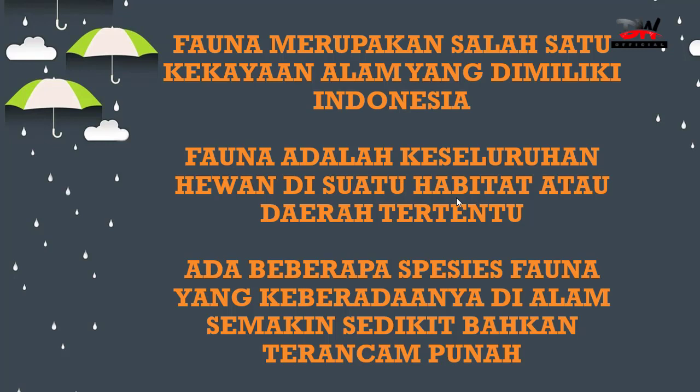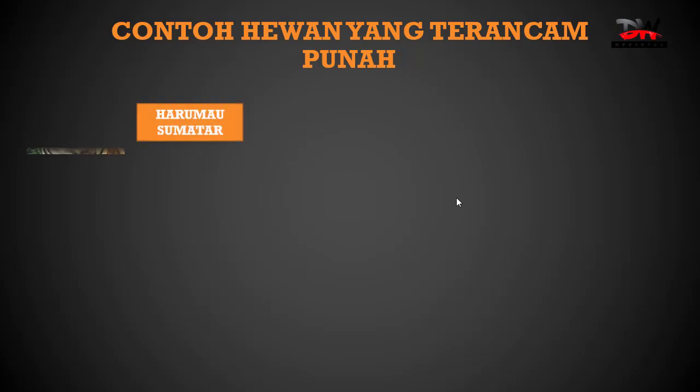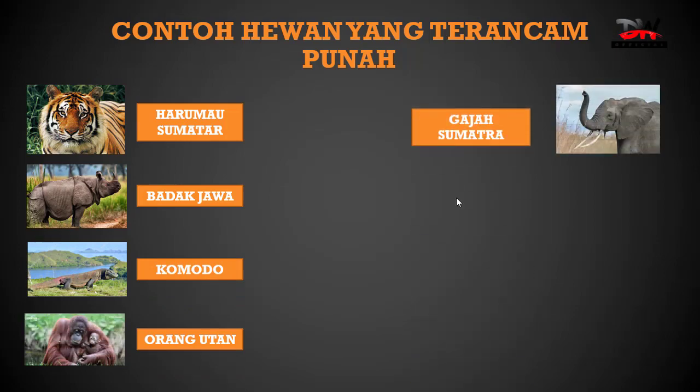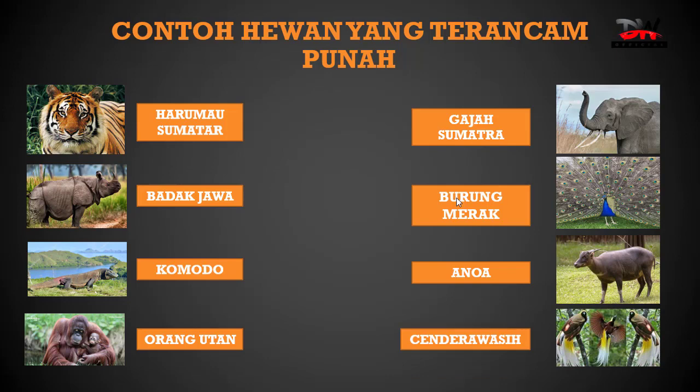Fauna merupakan salah satu kekayaan alam yang dimiliki Indonesia. Fauna adalah keseluruhan hewan di suatu habitat atau daerah. Tentu ada beberapa spesies fauna yang keberadaannya di alam semakin sedikit bahkan terancam punah. Contoh hewan yang terancam punah: harimau, badak jawa, komodo, orang utan, gajah Sumatra, burung merak, anoa — yang berasal dari Sulawesi dan bentuknya seperti kerbau — dan cenderawasih yang berasal dari Papua.